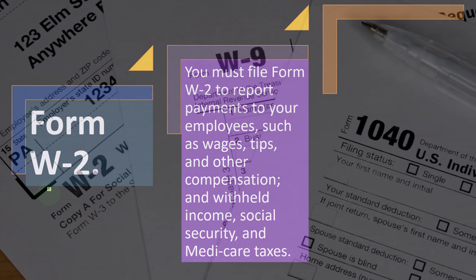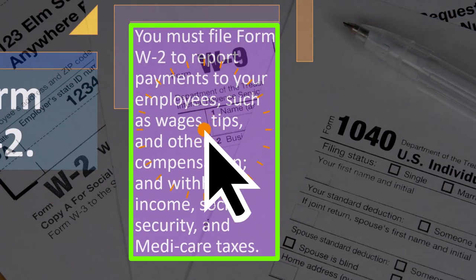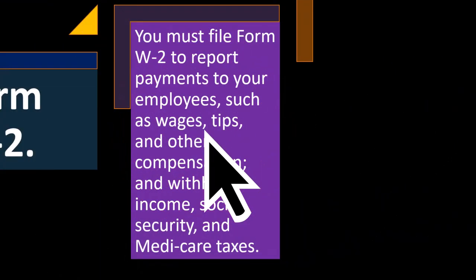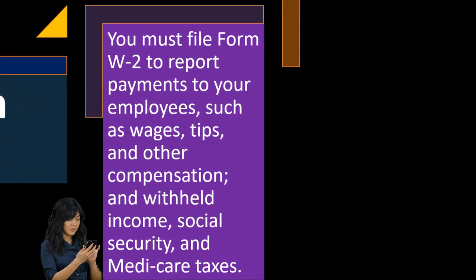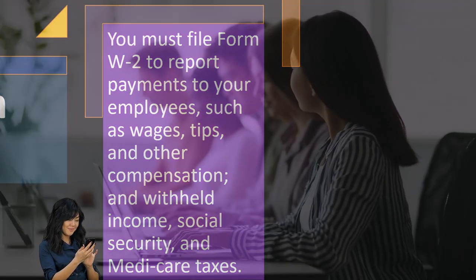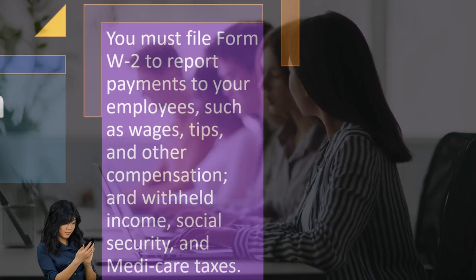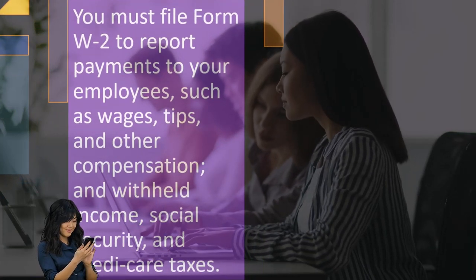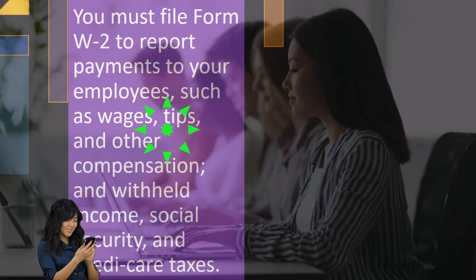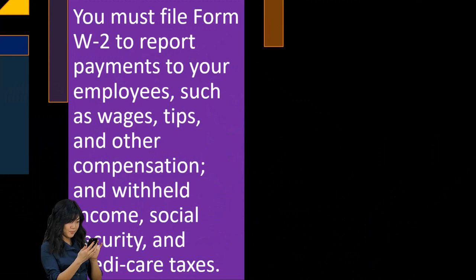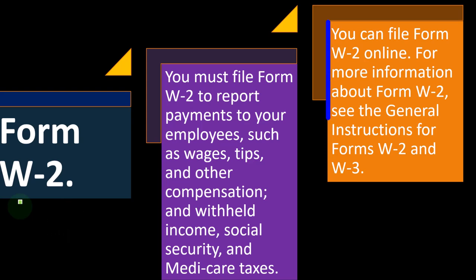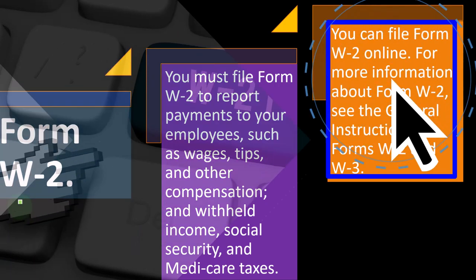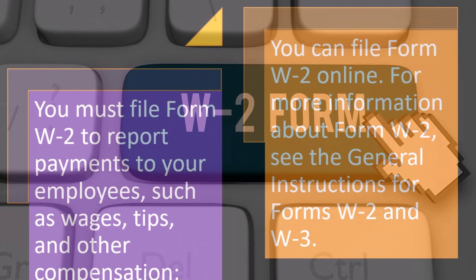You must file Form W-2 to report payments to your employees — such as wages, tips, and other compensation — and withhold income, social security, and Medicare taxes. The W-2 is probably the most common form we know of, but it's still quite complicated. There's a big difference between doing an employee situation — having to withhold money, process payroll taxes, deal with the 941s, the 940, issuing the W-2 and W-3 — and just giving someone a Form 1099. It's a lot easier to give someone a 1099 form; there are pros and cons to both formats. You can file Form W-2 online; see the general instructions for Form W-2 and W-3.